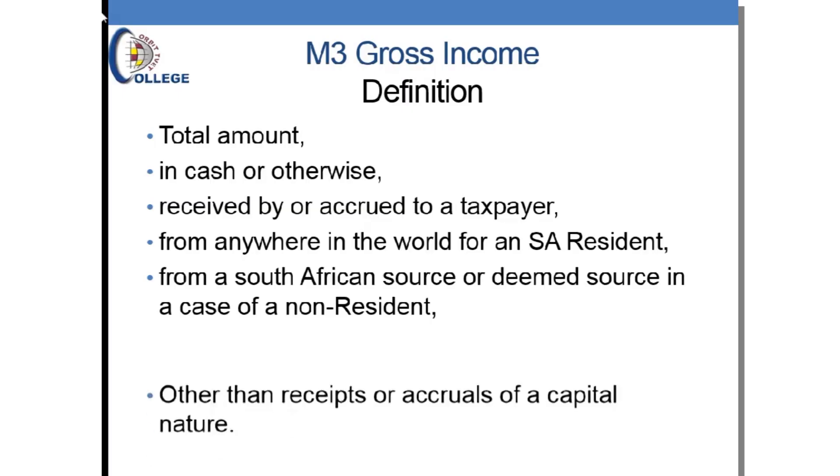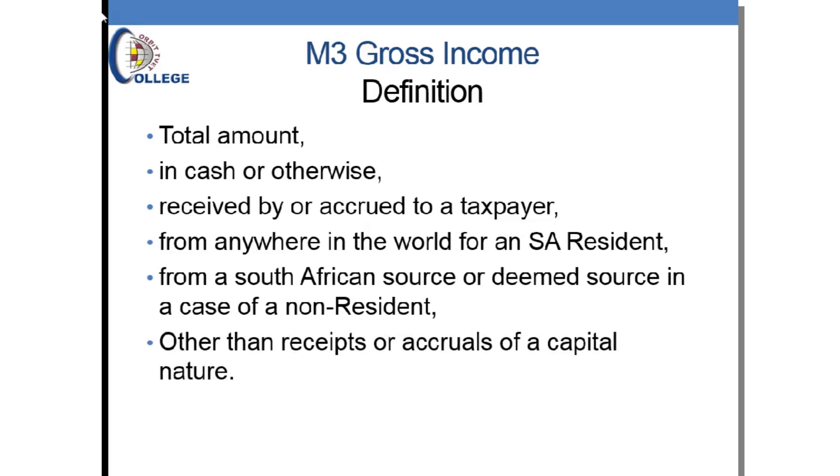Let us move to the last bullet, which splits between revenue and capital. The taxman taxes you on revenue or income but does not tax you on capital. Income tax students are also accounting students, and they understand capital. Remember when you started doing business and accounting at secondary school — they told you that capital is money to start a business. If you receive money and it is deemed to be capital, the taxman cannot tax you on it. But the taxman is going to tax you on revenue.